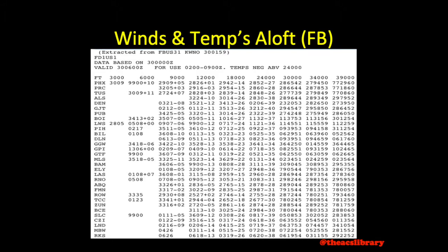This issuance contains data from the 30th day of the month at 0000 Zulu. The information is to be used for pre-flight planning and decision-making from 0200 Zulu to 0900 Zulu. The conditions forecasted can be expected to occur from 0600 Zulu onward.